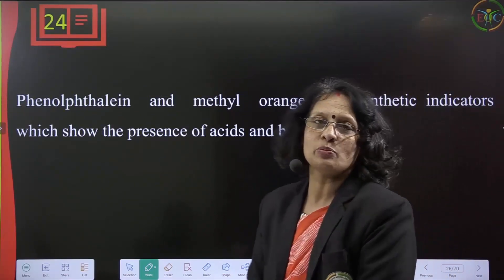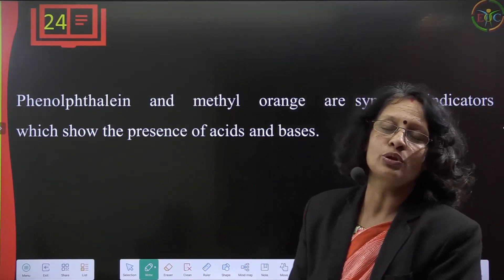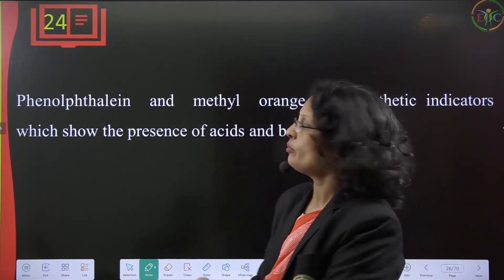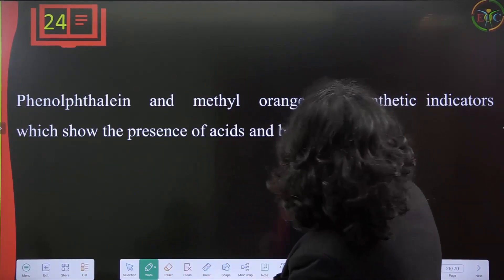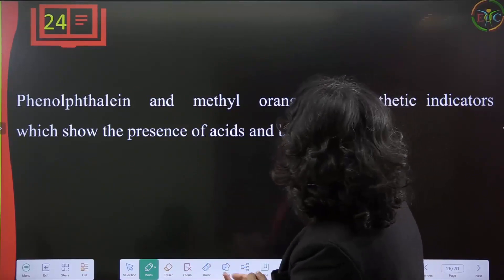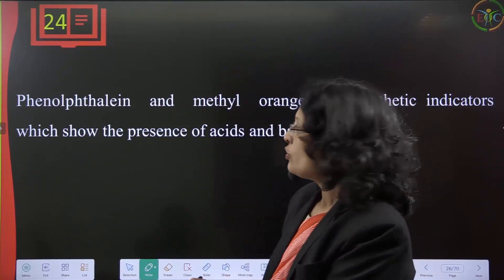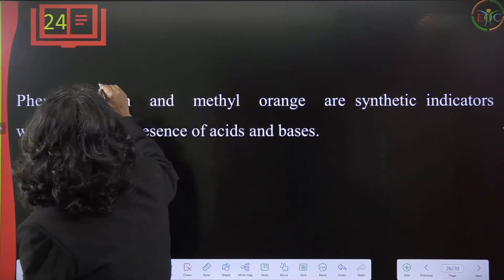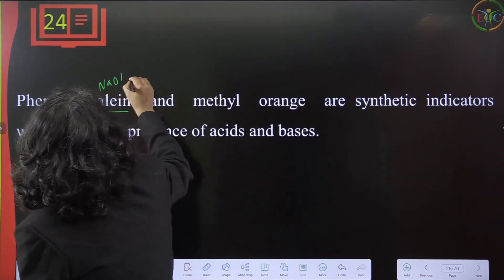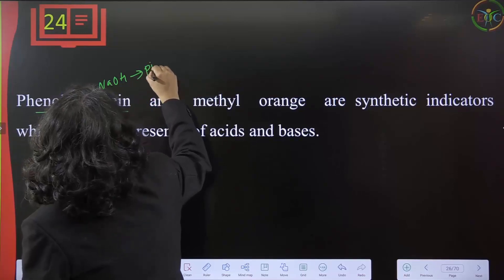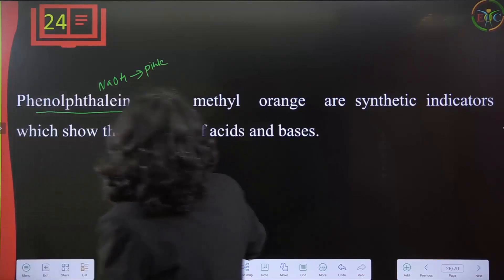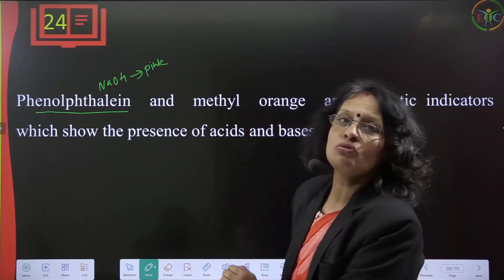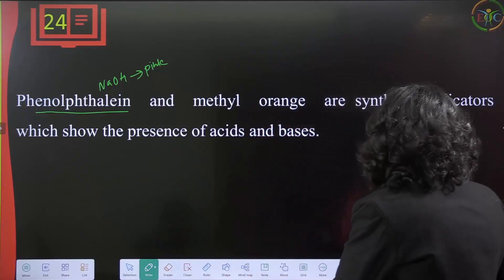Purple cabbage is called a universal indicator because it shows all pH values in different media. Phenolphthalein and methyl orange are synthetic indicators. In the presence of a base like sodium hydroxide, phenolphthalein turns pink. Acid turns methyl orange from golden yellow to orange.